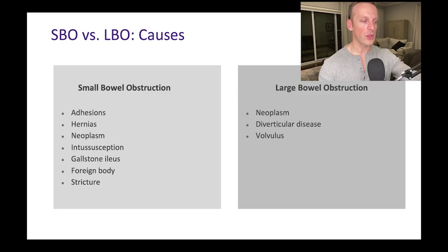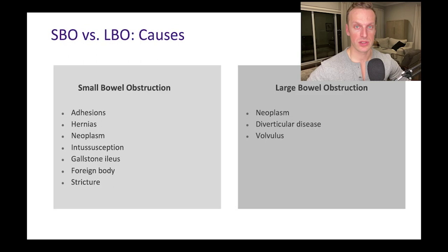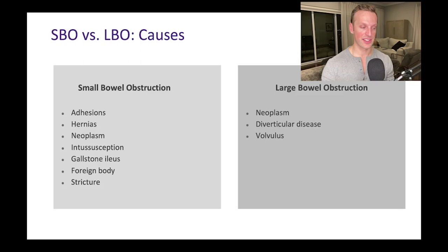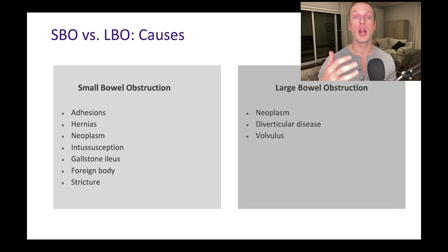Let's look at causes, breaking them down between large and small. For small bowel obstruction, the prominent causes are adhesions, hernias, and neoplasm. In Western civilizations, adhesions are the number one cause of small bowel obstructions. In the developing world, hernias are the number one cause — because less access to surgery means more large, unrepaired hernias, and relatively fewer adhesions.